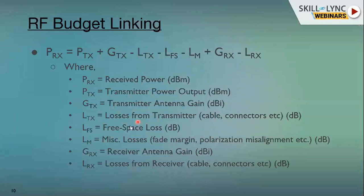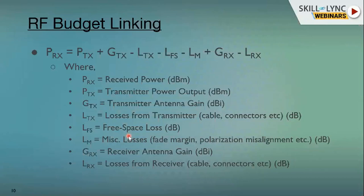When connecting systems together, losses come through cables and connectors. As shown on a PCB board earlier, a coaxial connector has its own losses — metals introduce conductor loss whenever a signal travels through them, and when dealing with air there is dielectric loss. When electromagnetic waves travel through air, there is also free space loss. In vacuum there is no loss, but air has a dielectric constant, so dielectric loss contributes to free space loss.